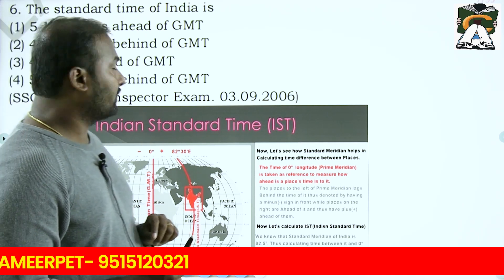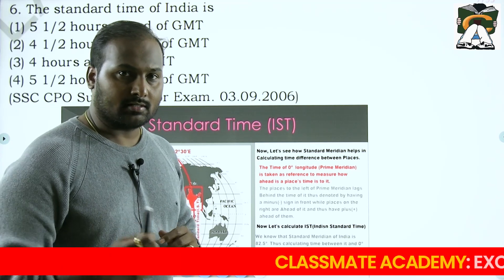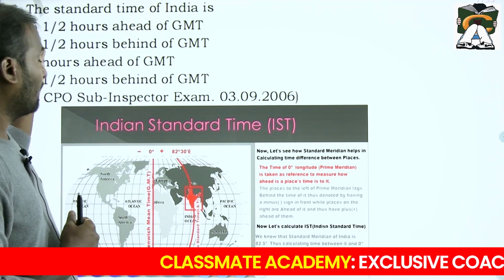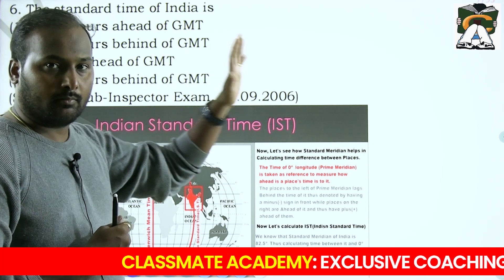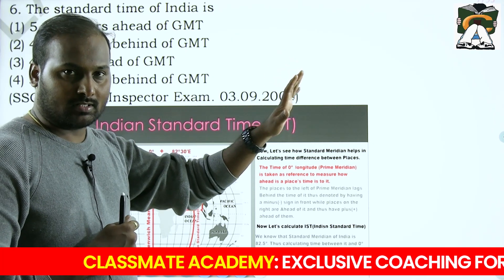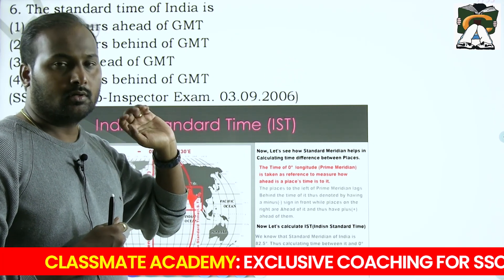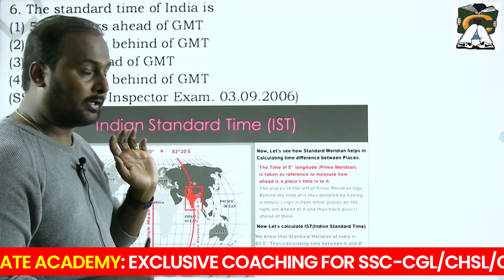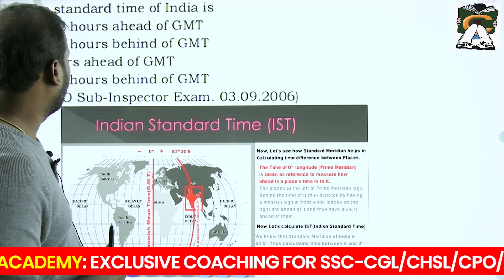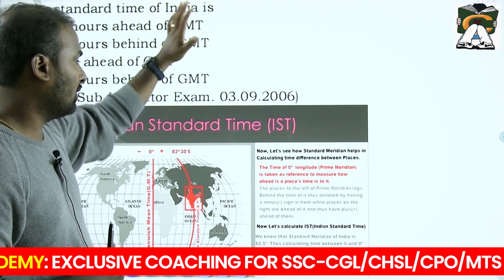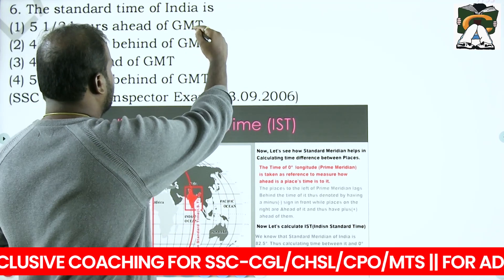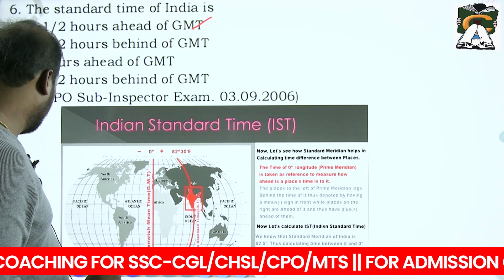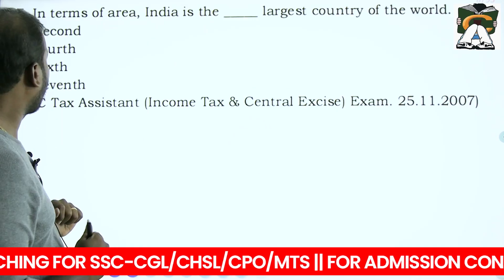The standard time of India is five and a half hours ahead of GMT because India is towards the Eastern Hemisphere, east of the Greenwich Meridian. So India is 5.5 hours ahead of GMT.